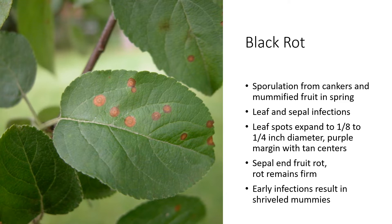For fruit rot, the sepal end becomes infected and the fruit will rot from that bottom end. This is a pretty firm rot — the opposite of what we'll see in White Rot — and it is black in color, hence the name Black Rot. Very early infections can result in mummified fruit: small fruit that get dry and hard and remain on the tree, whereas later infections cause that classic black rot symptom.